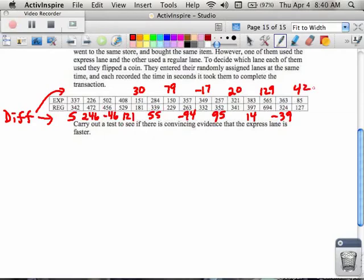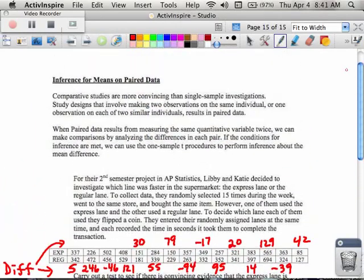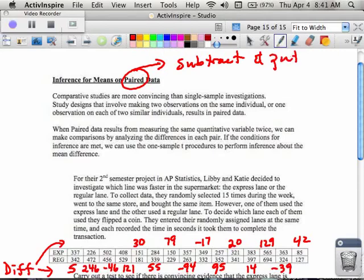And what ends up happening is, in your calculator, when you put this in, you put the differences into your list and do your calculations based on that. So the big idea here is that when you have paired data like this, when you see paired, subtract and put the differences in L1, and then do all the stuff that we've normally been doing.